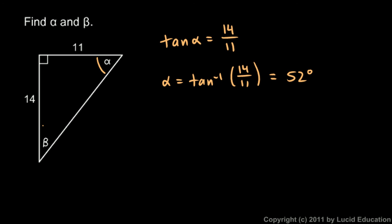So then beta down here, beta has to be 90 minus that. 90 minus 52 is 38, and that's 38 degrees.